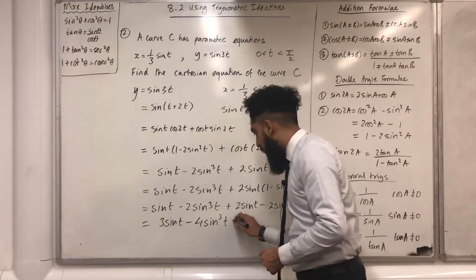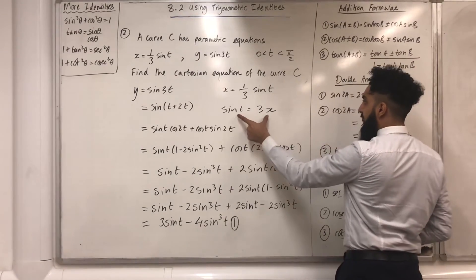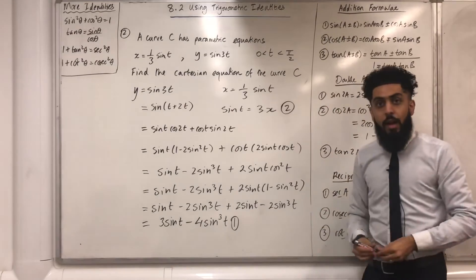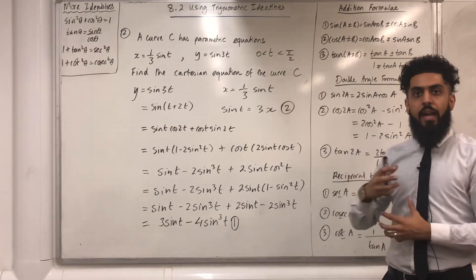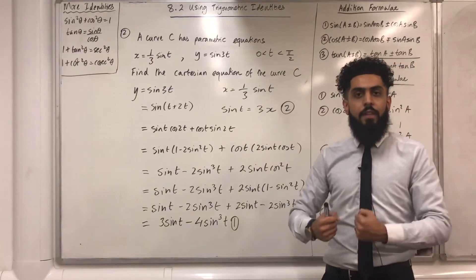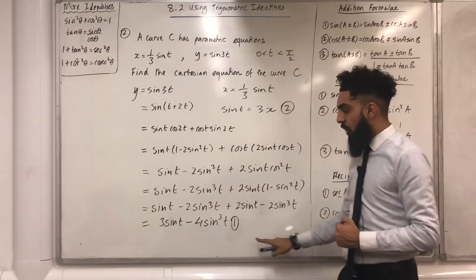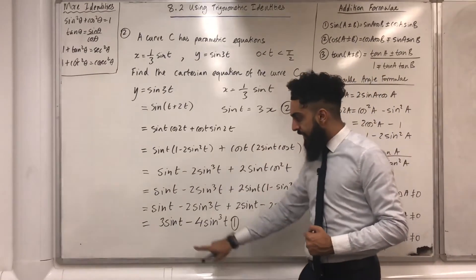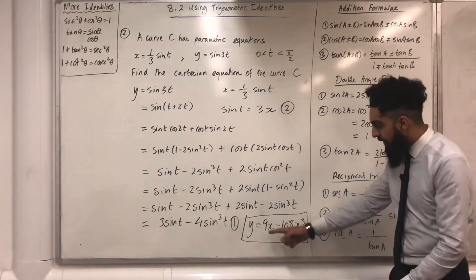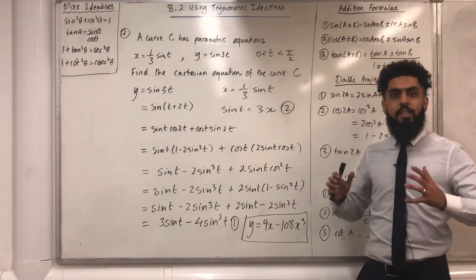And this equation — sin(t) equals 3x — I'm going to call it equation 2. I'm ready to now connect y and x, that is, find the Cartesian equation of curve C. All I need to do is substitute equation 2 into equation 1, replacing the sin(t)'s with 3x. At the end, I obtain y equals 9x minus 108x³.